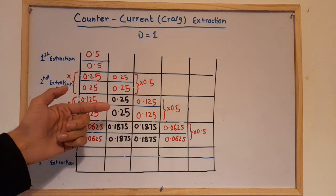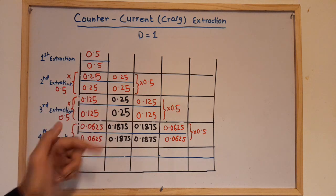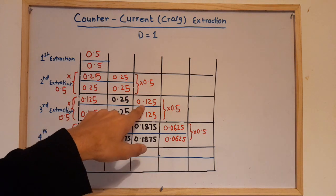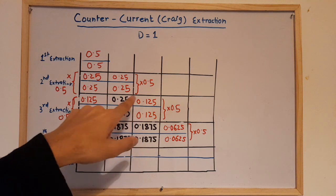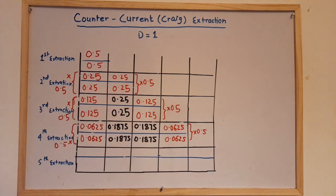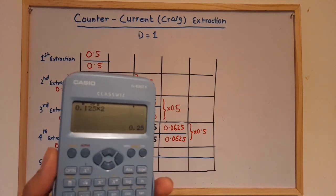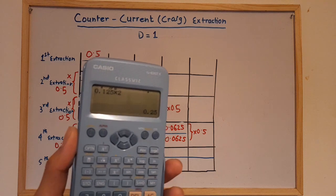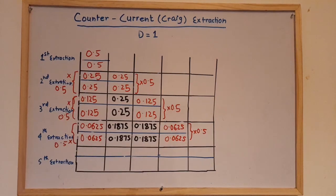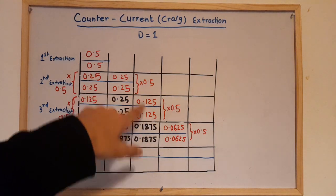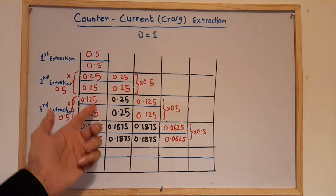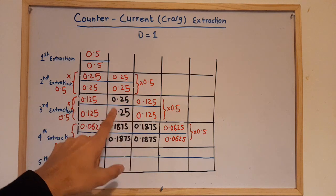Now, how do we get the middle values? For the third extraction, you multiply the value by 2. When you multiply 0.125 by 2, that becomes 0.25. You can multiply either on the left side or the right side by 2 and you'll get the same value, because those two values are the same.